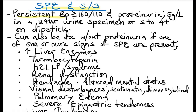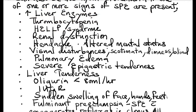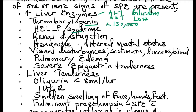Severe preeclampsia is persistent blood pressure of systolic more than 160 and diastolic more than 110, with proteinuria of at least 5 grams per litre in a 24-hour urine specimen or 3 to 4 plus on dipstick. In the absence of proteinuria, it can also be diagnosed if the patient has one or more signs or symptoms of severe preeclampsia, including elevated liver enzymes — raised alanine transaminase, aspartate transaminase, indirect bilirubin, and lactate dehydrogenase — as well as thrombocytopenia with platelets less than 150,000, and HELLP syndrome.